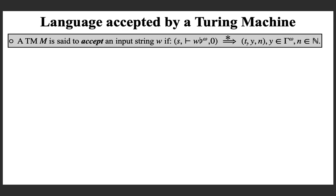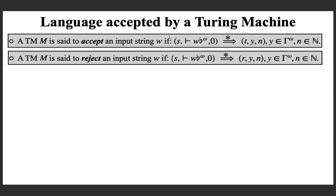Whether or not the string is completely processed does not affect acceptance. Similarly, a string is said to be rejected if the machine enters a configuration where the state is R. R is also a sink state — once the machine gets into R, it stays in R forever. So a string is accepted if processing eventually enters state T, and rejected if it eventually enters state R.